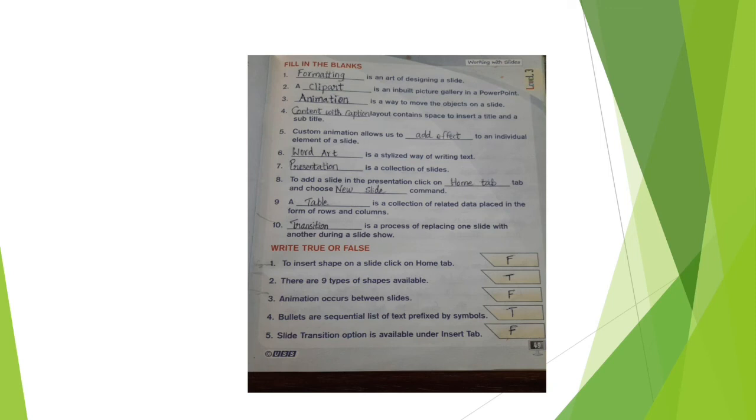Fill in the blanks answers: 1. Formatting is an art of designing a slide. 2. Clip art is an inbuilt picture gallery in PowerPoint. 3. Animation is a way to move objects on the slide. 4. Content with caption layout contains space to insert a title with a subtitle. 5. Custom animation allows us to add effect to an individual element of a slide. 6. Word art is a stylistic way of writing text. 7. Presentation is a collection of slides. 8. To add a slide, click on Home tab and choose New Slide command. 9. A table is a collection of related data placed in the form of rows and columns. 10. Transition is a process of replacing one slide with another using a slideshow.